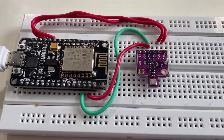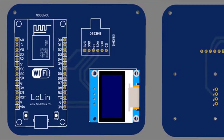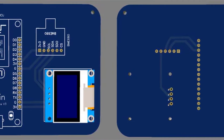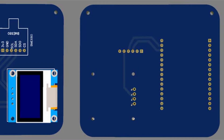Here is the connection diagram between the NodeMCU, BME680, and the OLED display. Connect the GND pin to ground and VCC to 3.3V. Note that the SDO pin of the BME680 should be connected to ground, as the original code is programmed to use the alternative I2C address 0x77.